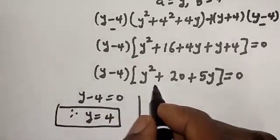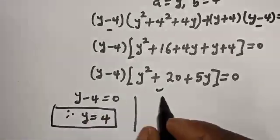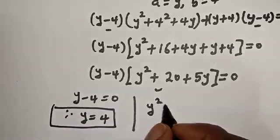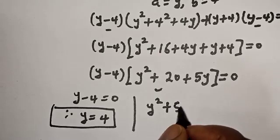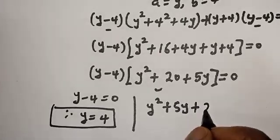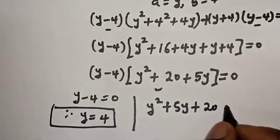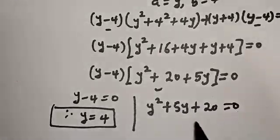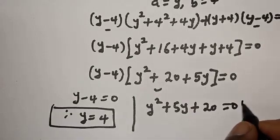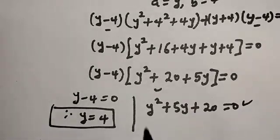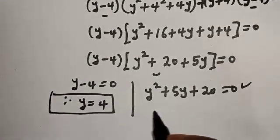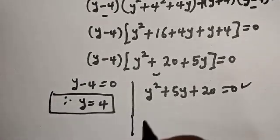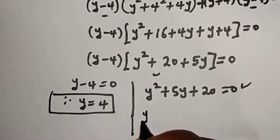The second case gives us y² plus 5y plus 20 equals 0. This is a quadratic equation. Let's solve this using the quadratic general formula, which gives us y equals minus b plus or minus square root of b² minus 4ac, over 2a.